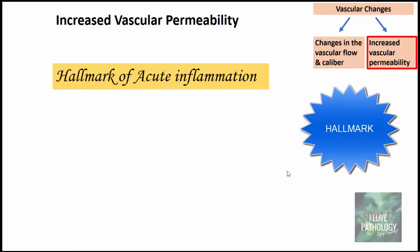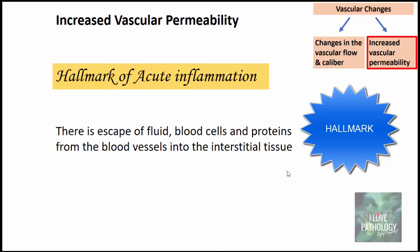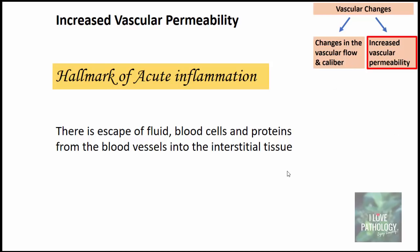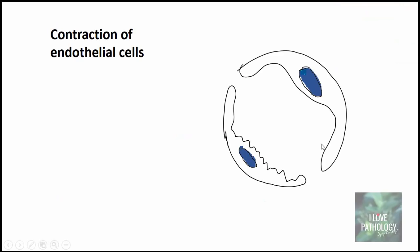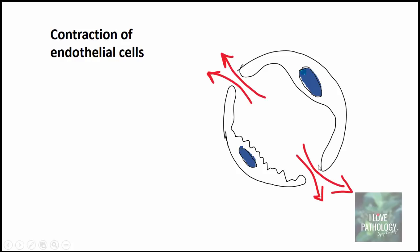Increased vascular permeability is the hallmark of acute inflammation. It involves the escape of fluid, blood cells, and proteins from blood vessels into the interstitial tissue. The first mechanism is contraction of endothelial cells: when endothelial cells contract, there is widening of the gaps between them, and fluid escapes through these widened pores. This is the most common mechanism of increased vascular permeability.